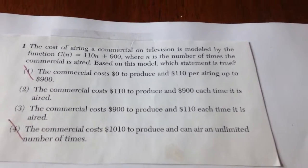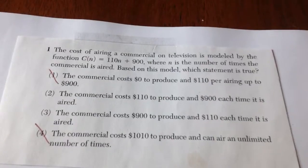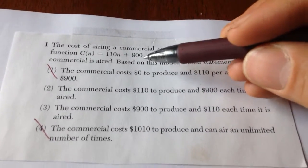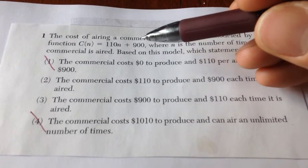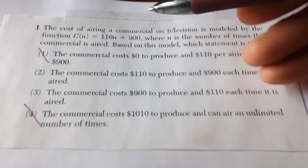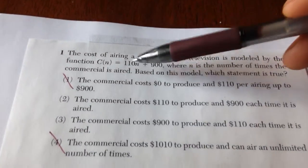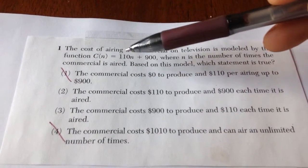Number one gives you a function C of n equals 110n plus 900. It tells you n is the number of times a commercial is aired. Since 900 does not have a variable, 900 is going to be our constant cost. It's not going to vary.